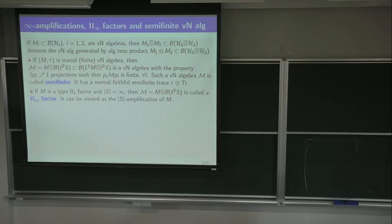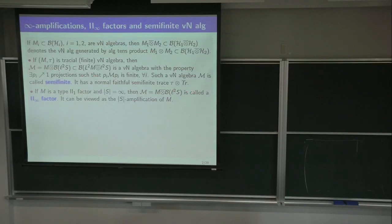Alternatively, they are characterized by the fact that they have what's called a faithful normal semi-finite trace. That is simply the tensor product of the trace on M with the trace on B(H). This is no longer everywhere defined; it's defined like the trace on B(H) — only on finite rank projections.